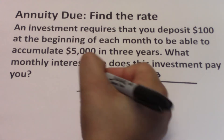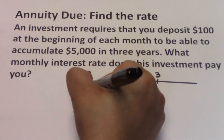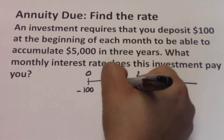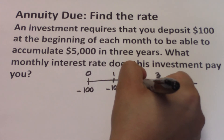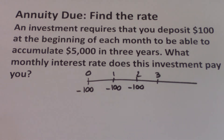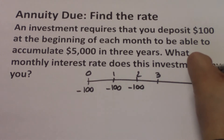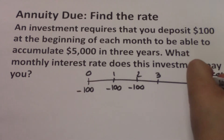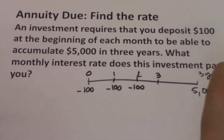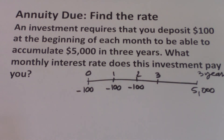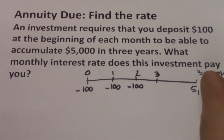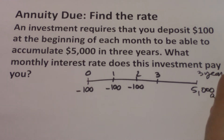The deposits start today, at time zero — negative $100 each month. We are trying to accumulate $5,000 in three years, so at the end of three years we want to have $5,000. That $5,000 is your future value because it happens later on the timeline.